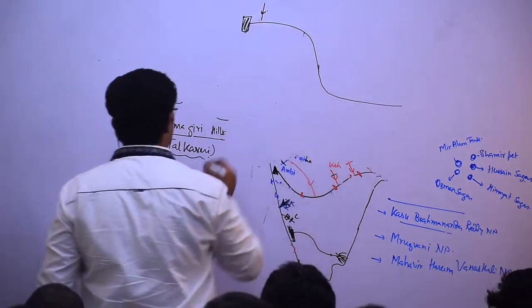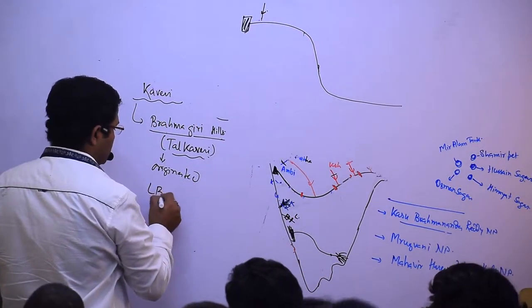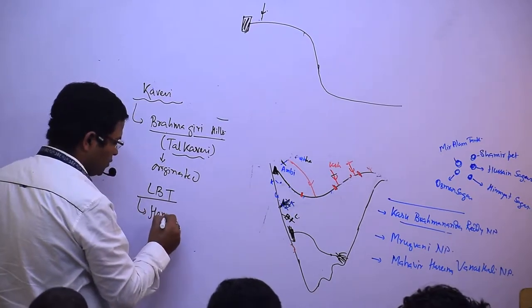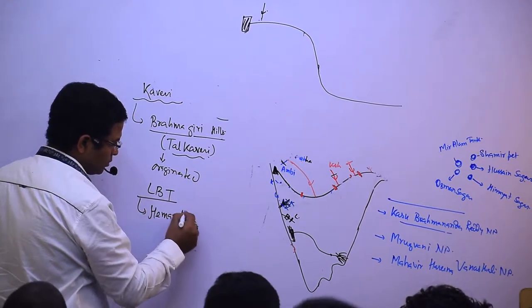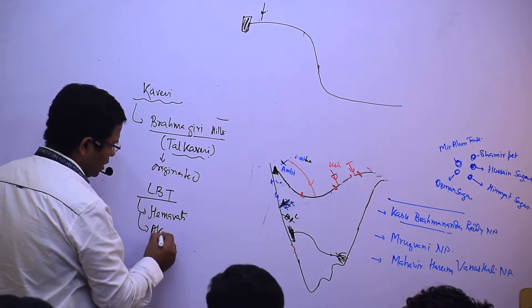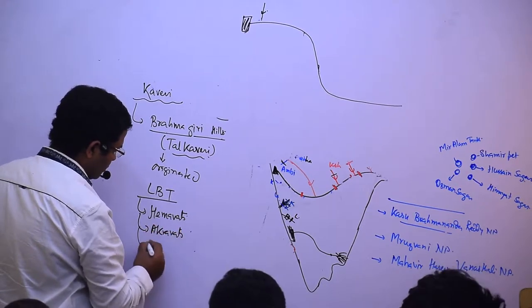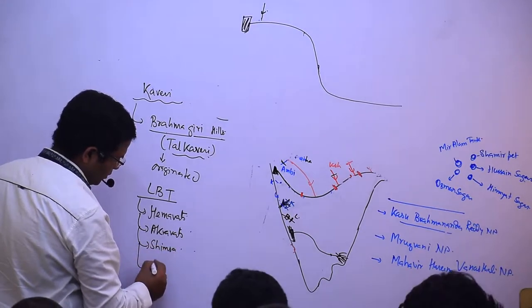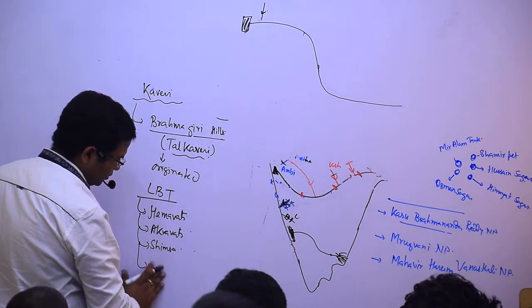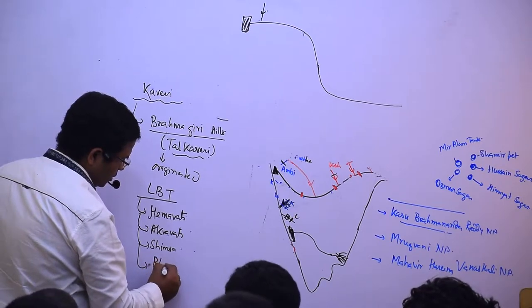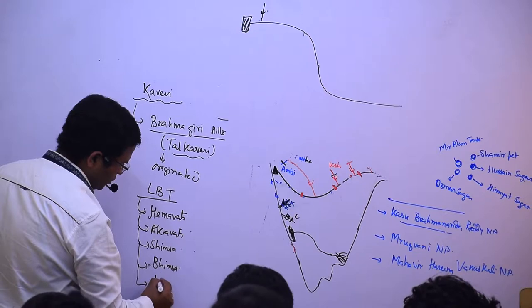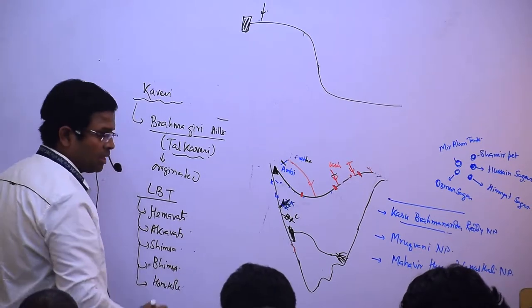Left bank tributaries are Hemavati, Akravati, Simsa, Bhimsa, and Honu Hol.